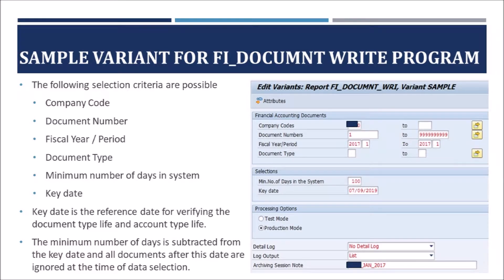Here we can see a sample variant screen for the FI_DOCUMENT archiving object. The selection criteria for FI_DOCUMENT include options like company code, document number, fiscal year or period, document type, minimum number of days in the system, and key date. The key date is the reference date for verifying the document type life and account type life. The minimum number of days is subtracted from the key date, and all documents after this date are ignored at the time of data selection.